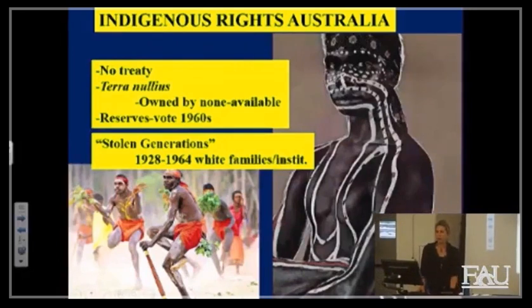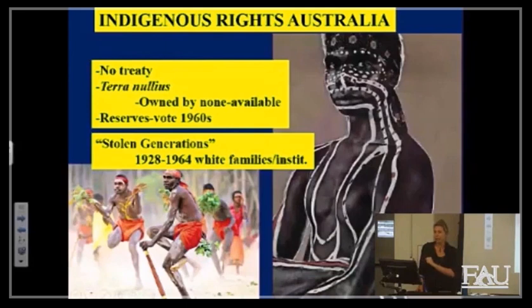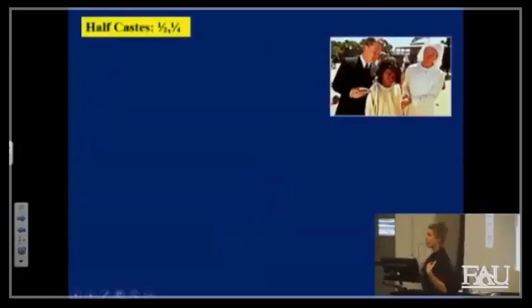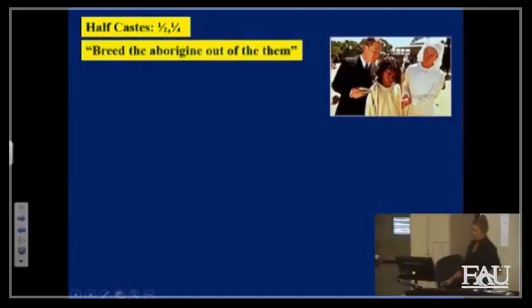Another important term: the Stolen Generations. These are on your terms list. Basically, 1928 to 1964, they would take Aboriginal children to be raised in white families or white-run institutions. You rip somebody away from their family to make them more like you — and it's disgusting. We did the same thing in the United States with indigenous people, so before we get judgy about anybody else.